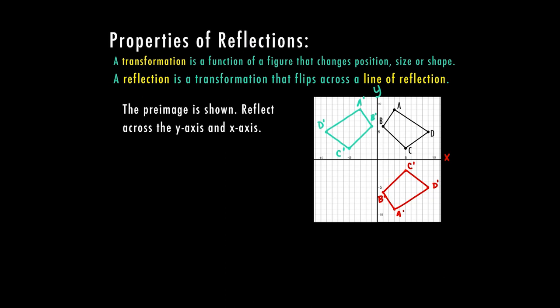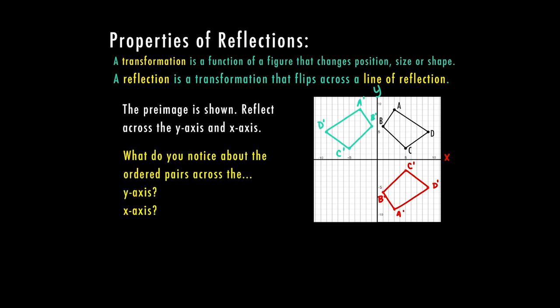Now we connect these points and we can see that our image in green is reflecting across the y-axis. From point B, looking at the center, it's like reflecting in a mirror — it looks like the opposite, it's flipped, but it's still the same shape.